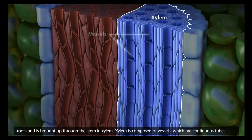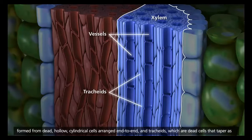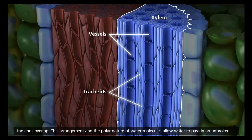Xylem is composed of vessels, which are continuous tubes formed from dead, hollow, cylindrical cells arranged end to end, and tracheids, which are dead cells that taper as the ends overlap.